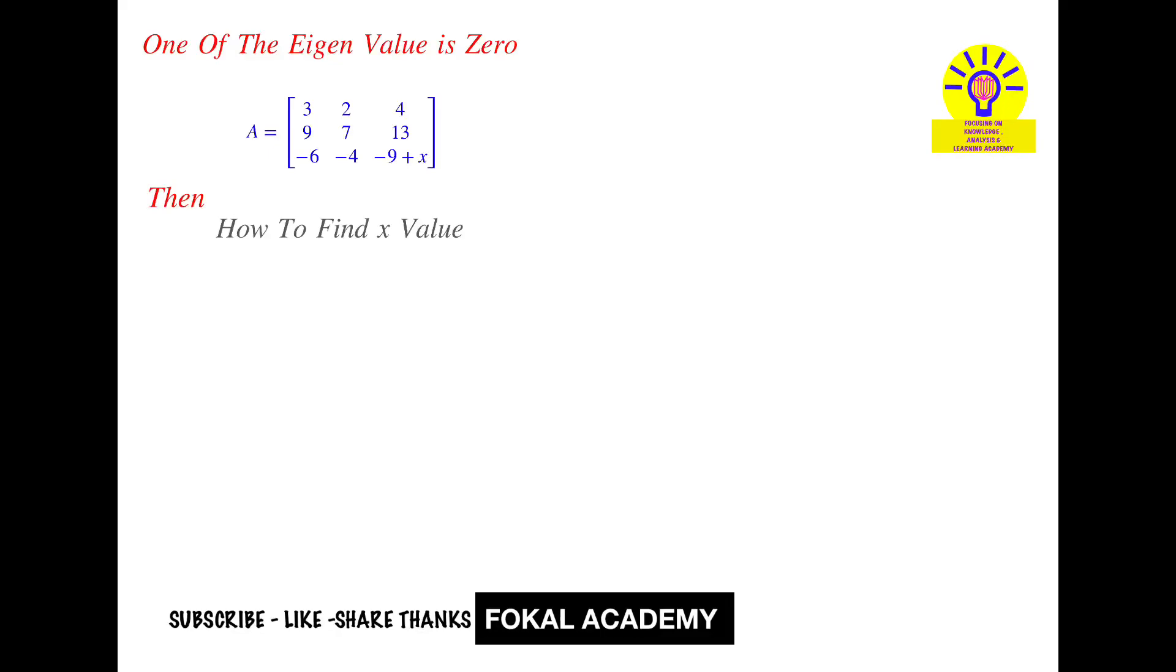Hi everyone, welcome to Focal Academy. See this problem here: one matrix is given and its matrix order is 3 by 3, and given that one of the eigenvalues is 0 for the given matrix, then how can you find missing value x? Means for what value of x does this matrix have one eigenvalue equal to 0? How can you find that x value? This is the problem.